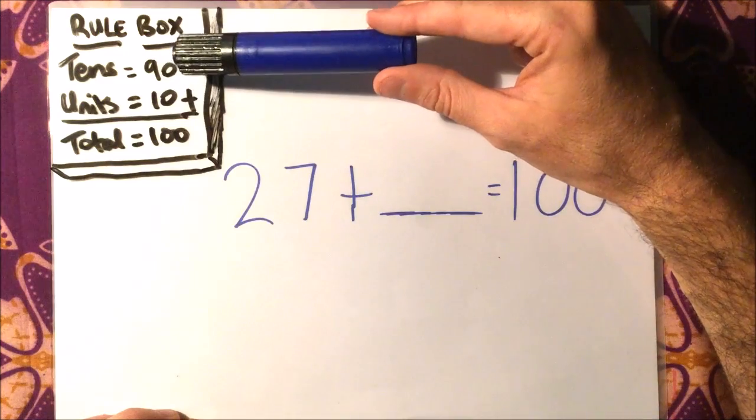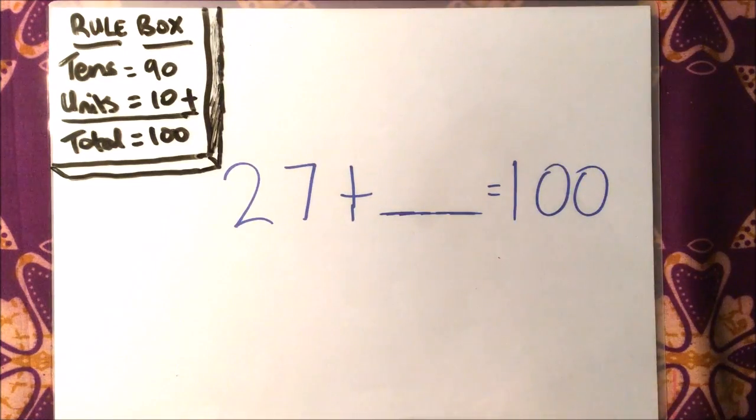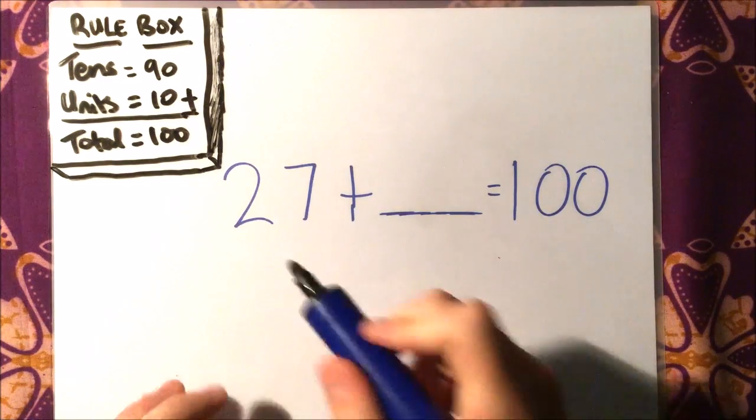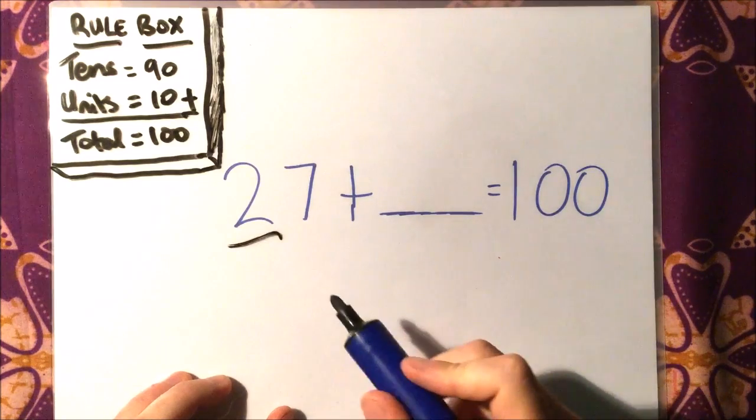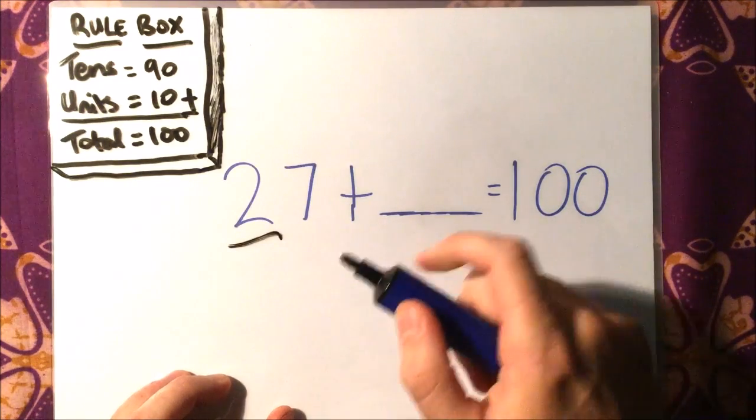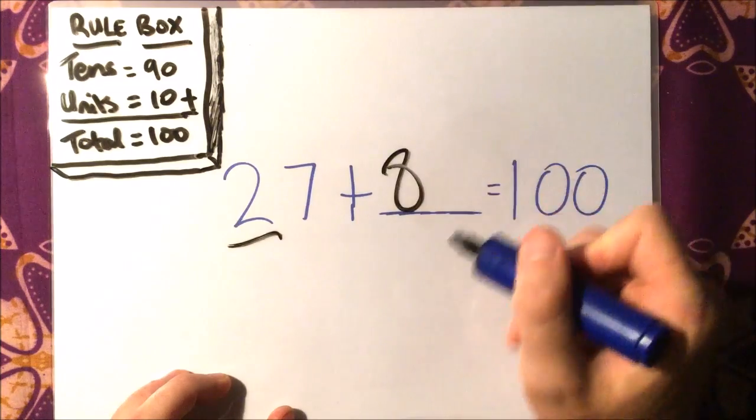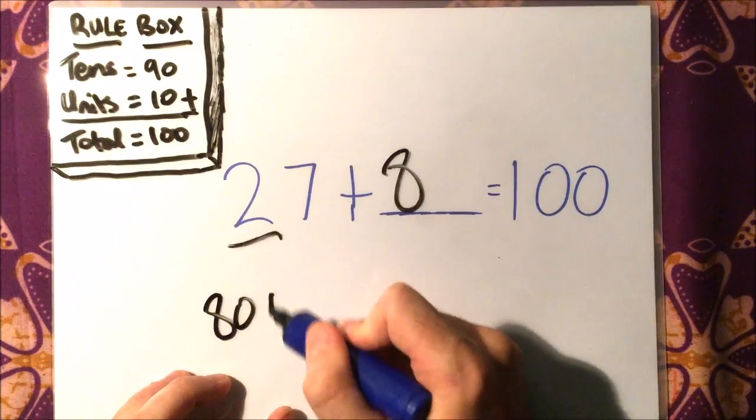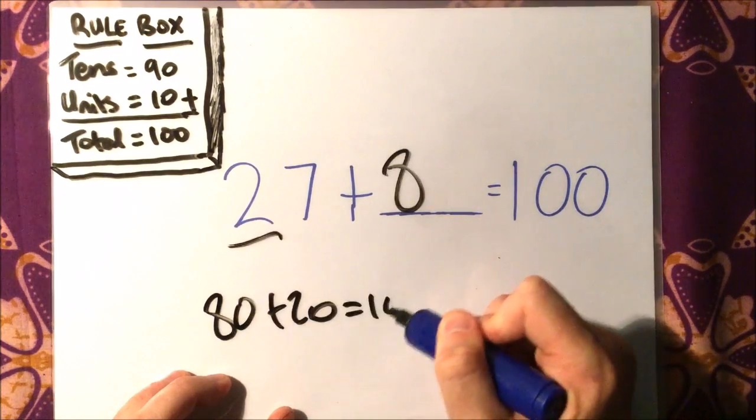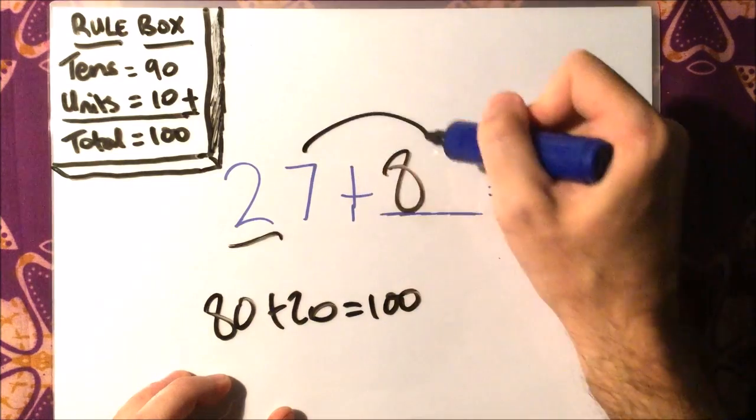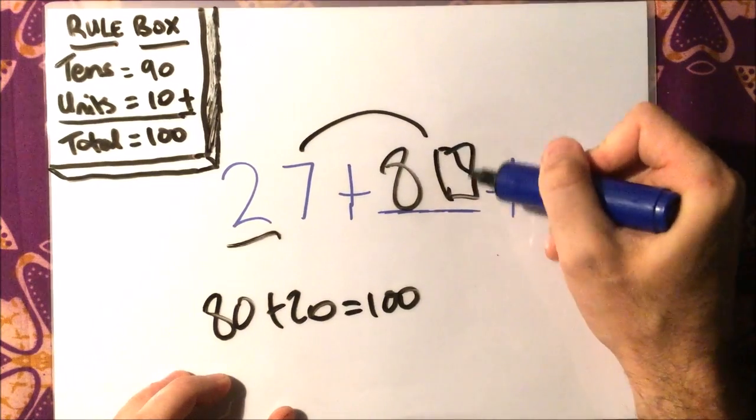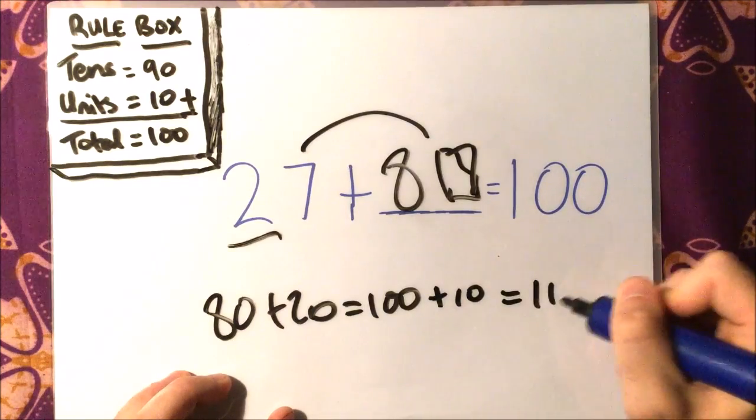What a lot of people do is add something to the tens that make it a hundred, so somebody might add 80. But 80 and 20 make a hundred. Therefore, the 7 and whatever else needs to go in here would make a 10, and then our answer would be 110, and that's not what we want.